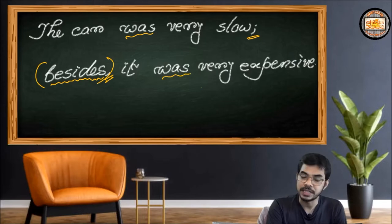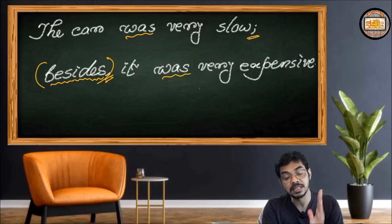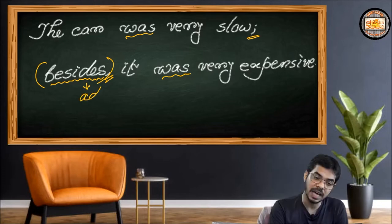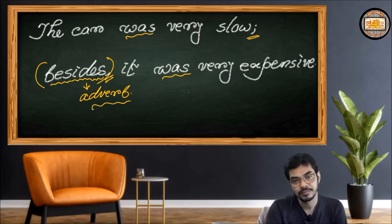Yes, dear friends, I am also saying this is a conjunction — but there's a 'but' in it. It's not a conjunction; rather, this is an adverb. That's what I want to tell you. This is an adverb, but it's performing the function of a conjunction.